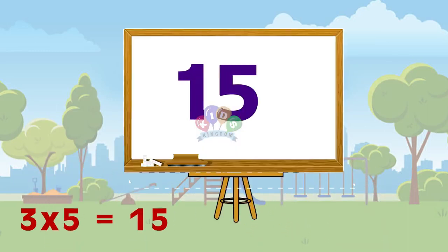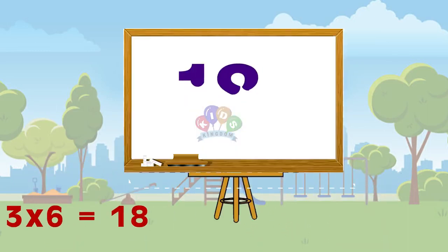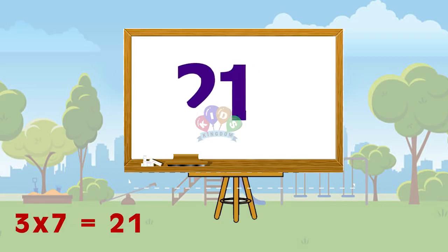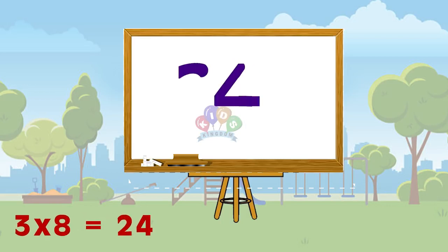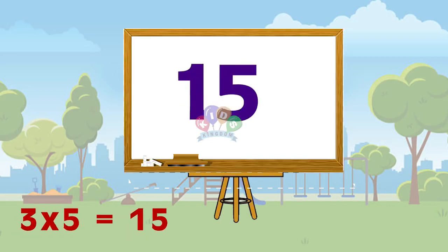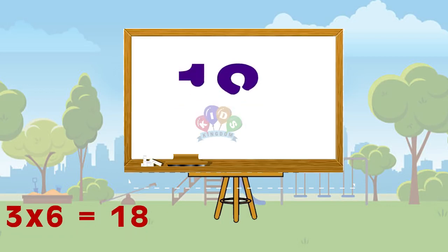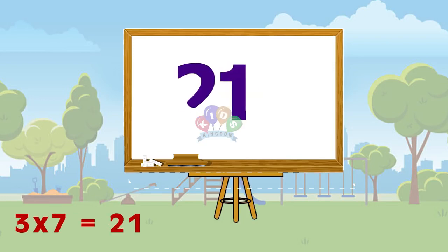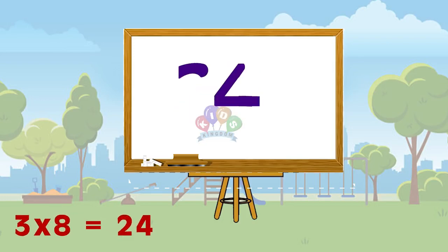Three 5s are 15, 3 6s are 18, 3 7s are 21, 3 8s are 24. Three 5s are 15, 3 6s are 18, 3 7s are 21, 3 8s are 24.